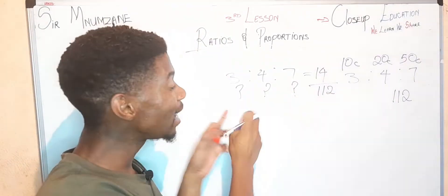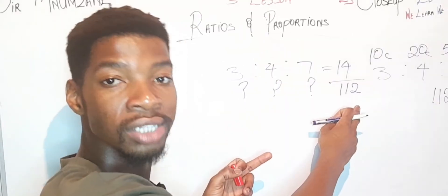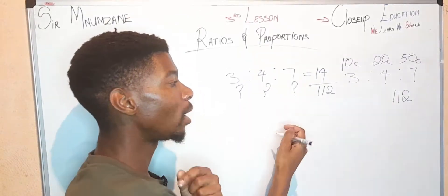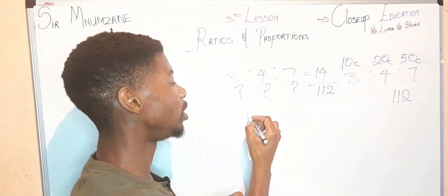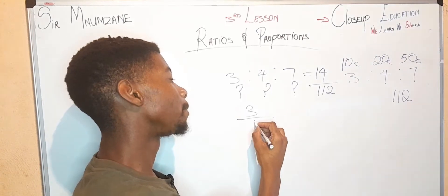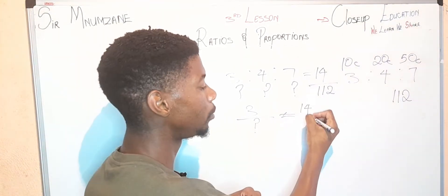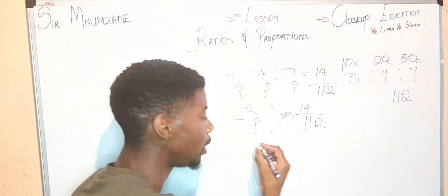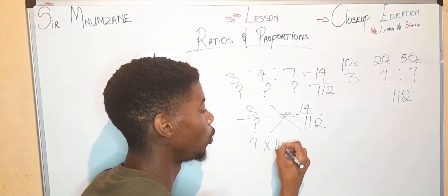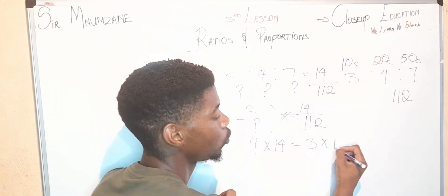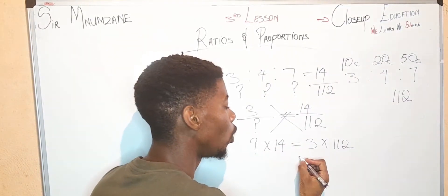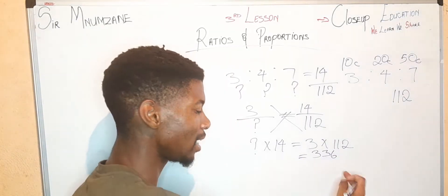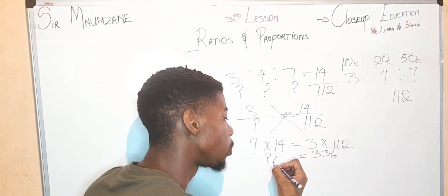You just write your ratios: 3:4:7. What is our total? 3 plus 4 is 7, plus 7 is 14. So we have 14, and the total coins is 112. The question is asking about 10 cent coins. Let's use cross multiplication: the unknown times 14 equals 3 times 112. 3 times 112 is 336.